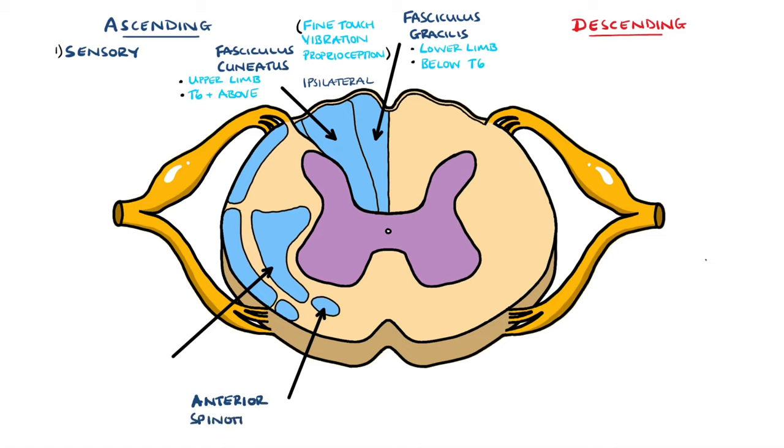Next up, we have the anterior spinothalamic and the lateral spinothalamic pathways. The anterior spinothalamic tract is responsible for crude touch and pressure, while the lateral spinothalamic tract is responsible for pain and temperature. In contrast to the dorsal column tracts...